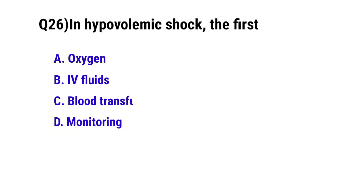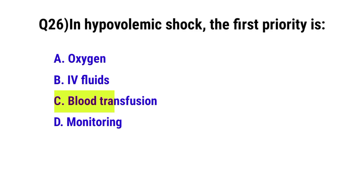Question No. 26. In hypovolemic shock, the first priority is — the correct option is B: IV fluids.